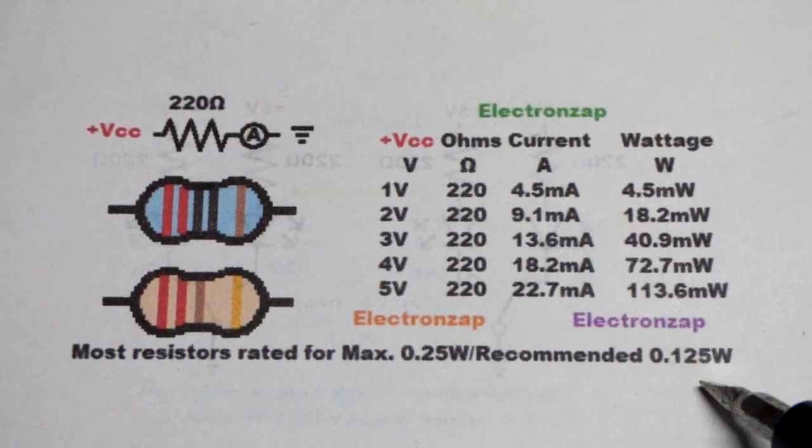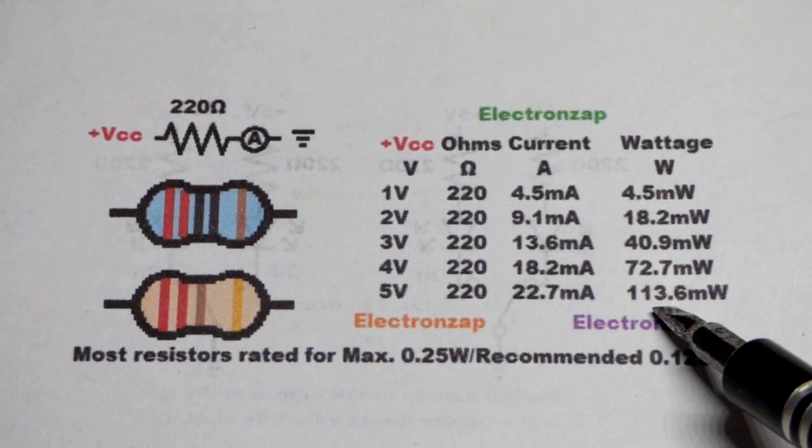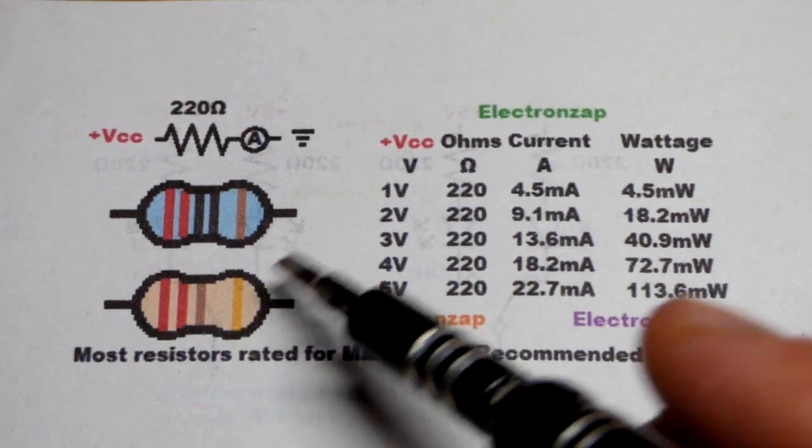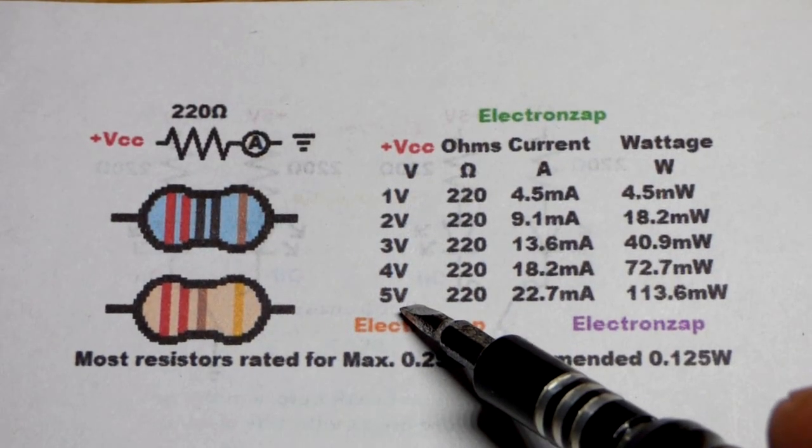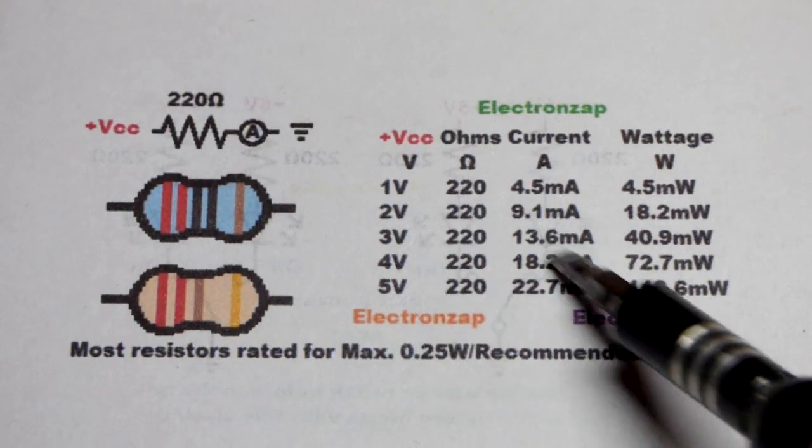But in any case, that is below the 0.125 watts. You know, that's close, it's still going to get hot. You don't want to, if you put 5 volts across the resistor, you don't want to grab that resistor while it's been powered for a while. It's going to get quite hot.